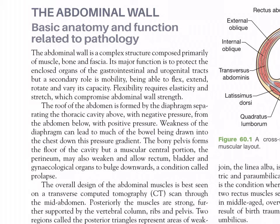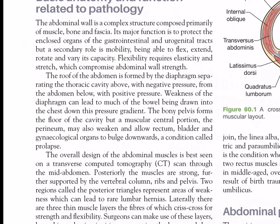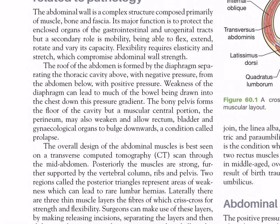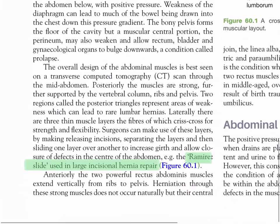Flexibility requires elasticity and stretch, which comprise abdominal wall strength. The roof of the abdomen is formed by the diaphragm, separating the thoracic cavity above with negative pressure from the abdomen below with positive pressure. Weakness of the diaphragm can lead to much of the bowel being drawn into the chest down this pressure gradient. The bony pelvis forms the floor of the cavity, but a muscular central portion — the perineum — may also weaken and allow rectum, bladder, and gynecological organs to prolapse downwards.